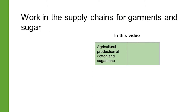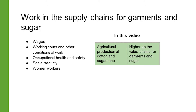In this video we will look at some specific aspects of work in these supply chains. We will learn about wages, working hours and other conditions of work, occupational safety and health, social security, and some issues faced specifically by women workers. Many of the issues faced by workers in the agricultural production of cotton and sugarcane are so specific that they have to be considered separately from the broader supply chains for garments and sugar.